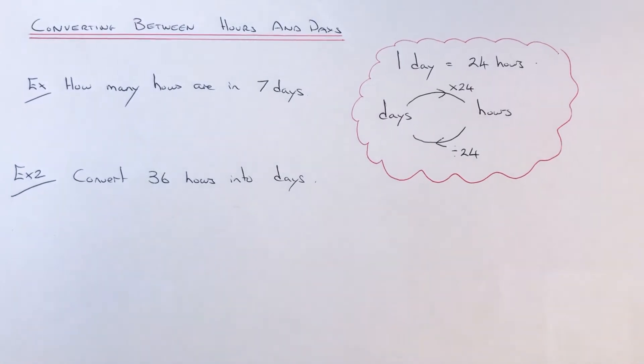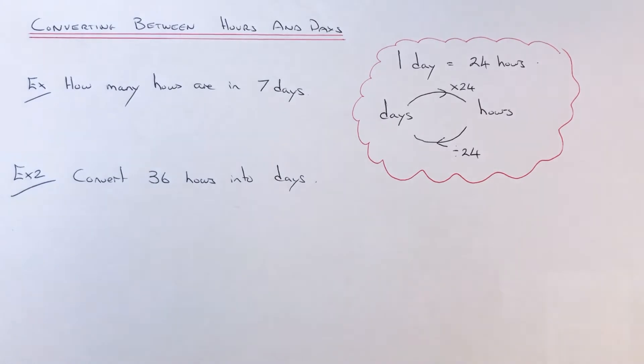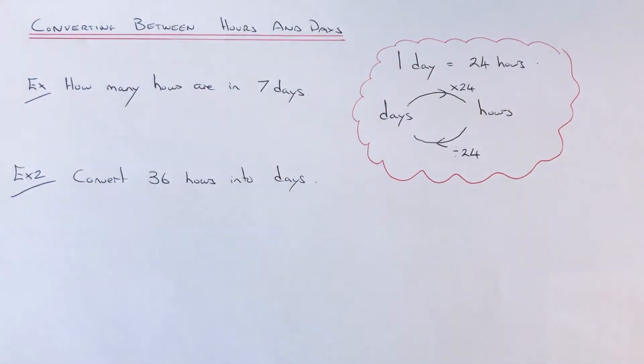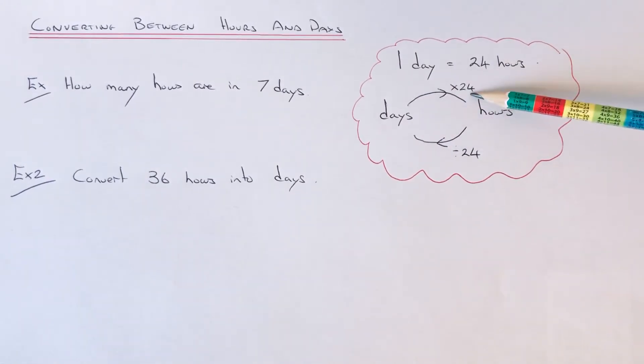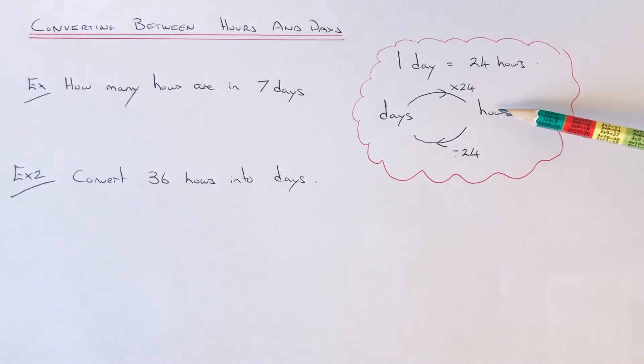Hi guys, welcome back. This is Maths 3000. Today I'm going to show you how to convert between hours and days. To do this, you need to know that one day is the same as 24 hours. If you're converting days into hours, you multiply by 24. If you're converting hours back into days, you divide by 24.